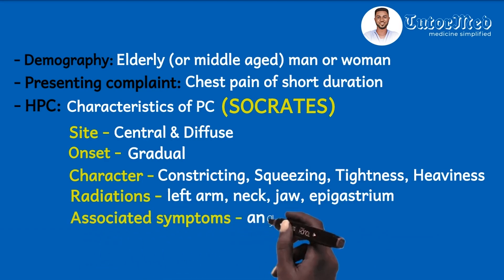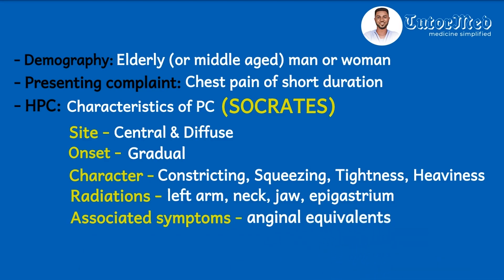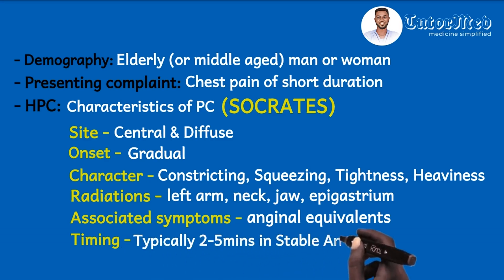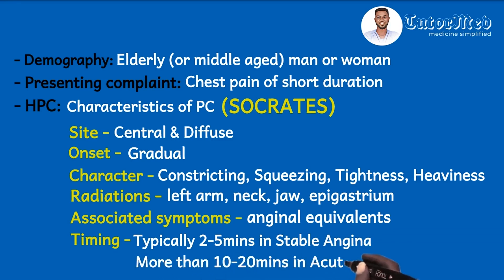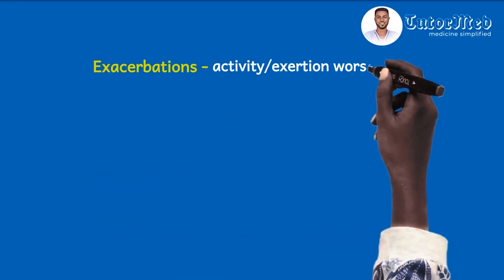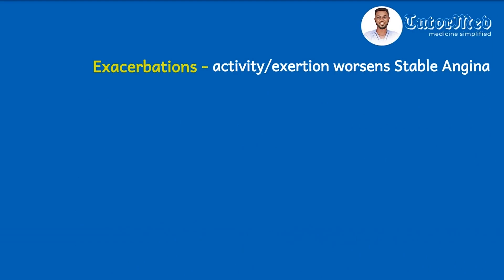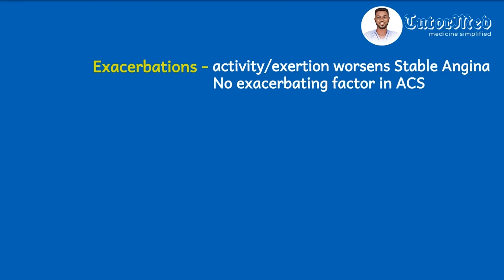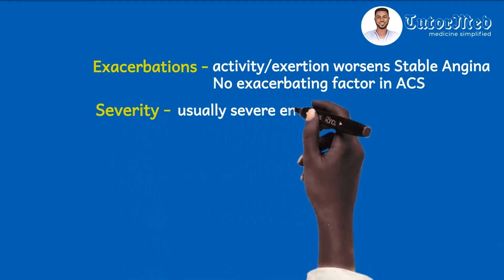Radiation sites include the left arm or both arms, the neck, lower jaw, and epigastrium. Associated symptoms are the angina equivalents: nausea and/or vomiting, diaphoresis, and atypical pain sites such as belching. For timing, stable angina typically lasts two to five minutes, while acute coronary syndrome lasts more than 10 to 20 minutes. Activity or exertion worsens stable angina but this is not so in ACS. The severity is usually enough to impair activities of daily living.